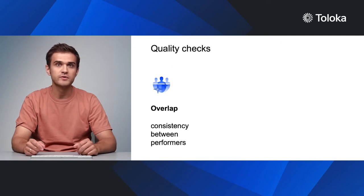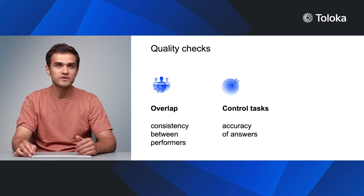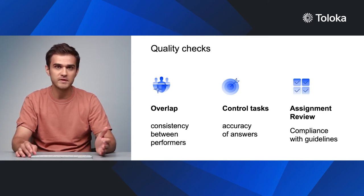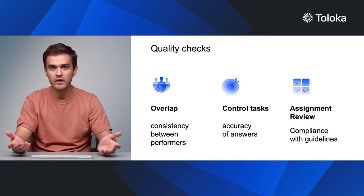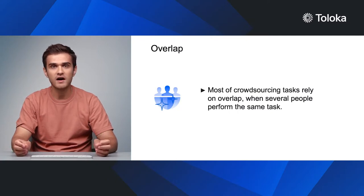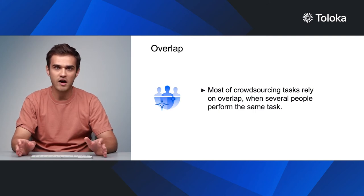There are several ways you can do this. The first is overlap — are there any performers whose opinions consistently contradict those of other participants? The second is a control task — are there performers who give incorrect answers to the simplest questions? And the third is assignment review — if a task involves creative work, does it fit the guidelines? Overlap is when several people perform the same task. For example, you can get five different users to assess one picture in order to flag images for adult content, setting an overlap of five. Overlap is crucial for most crowdsourcing tasks.